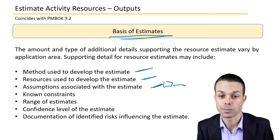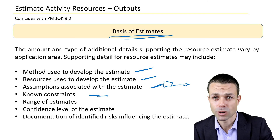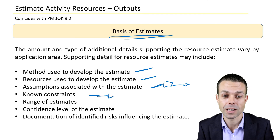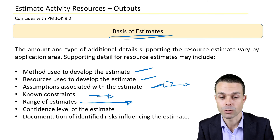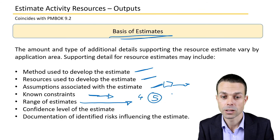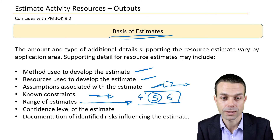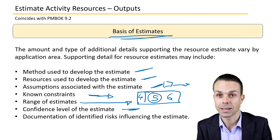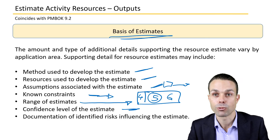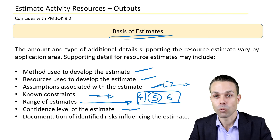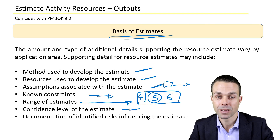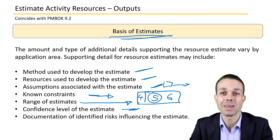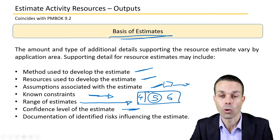The basis of estimates also captures constraints — for example, if John is on holiday for two weeks and can only start later — the range of estimates (e.g., five weeks needed, with a range of four to six weeks), the confidence level in the estimate, and documentation of identified risks. Risks might include someone leaving the organization, currency fluctuations if bringing in external or overseas resources, and other factors brainstormed with the risk or project team.